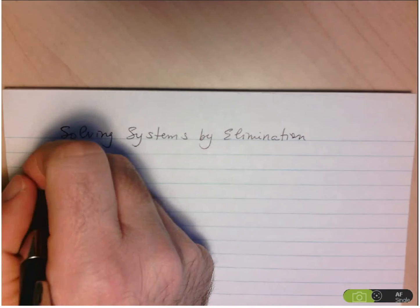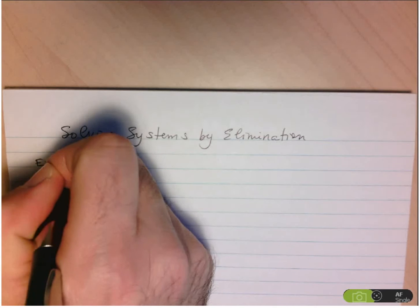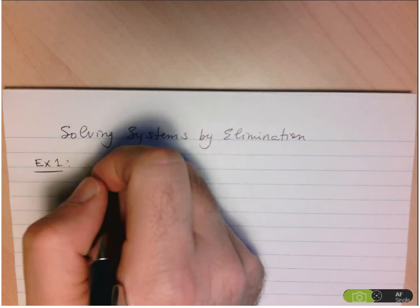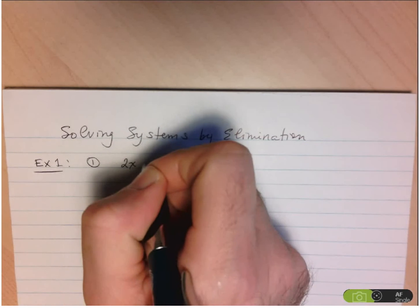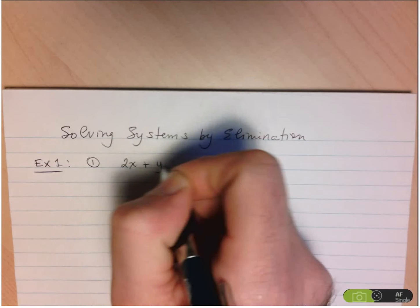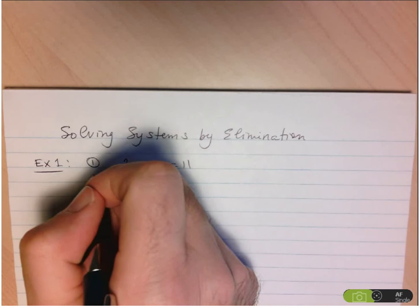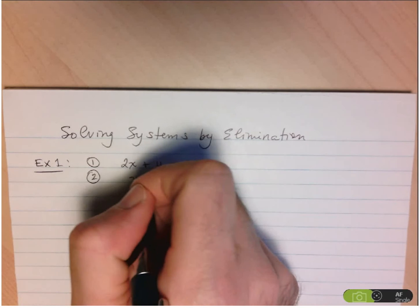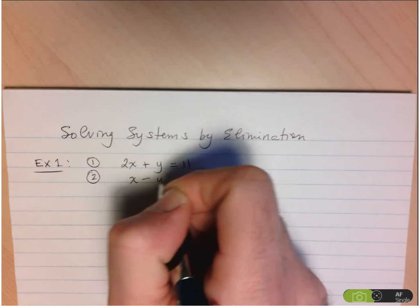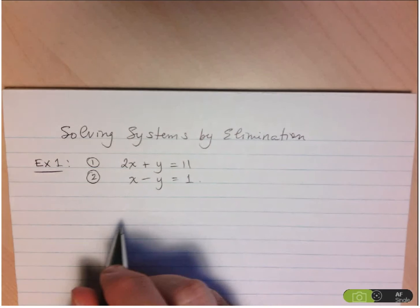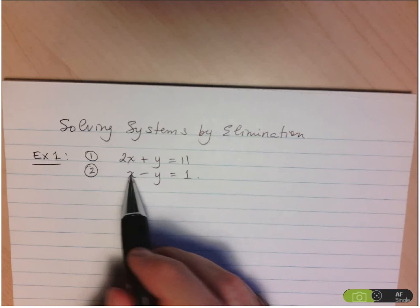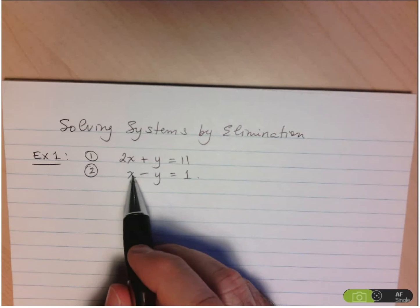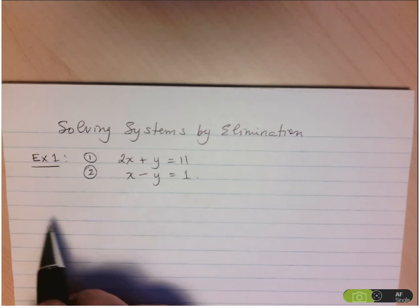Let's start by looking at an example. For example 1, equation 1 is 2x plus y equals 11, and equation 2 is x minus y equals 1. When we look at this example, we see that substitution would work very well, because we have three variables that are all easy to isolate.